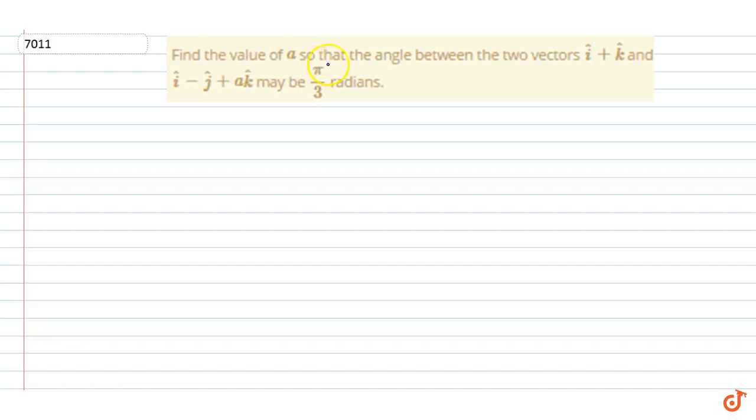In this question, find the value of a so that the angle between the two vectors i plus k and i minus j plus ak may be π by 3 radians.